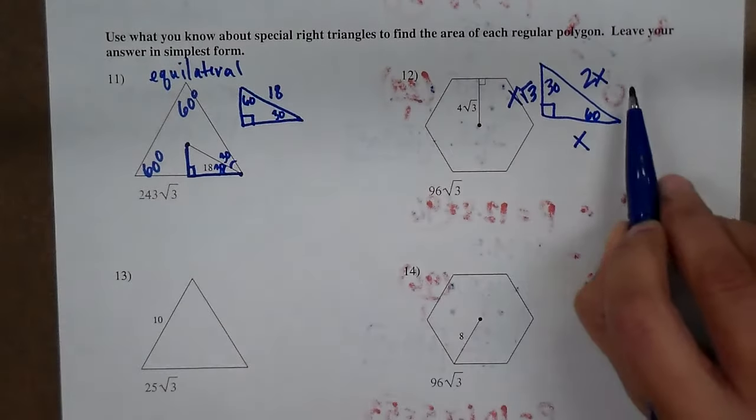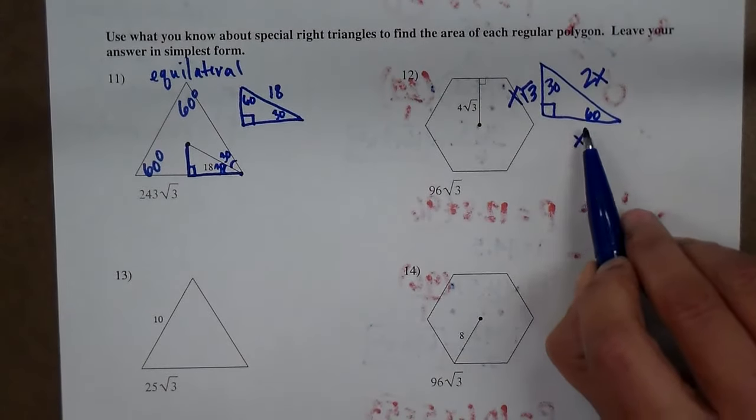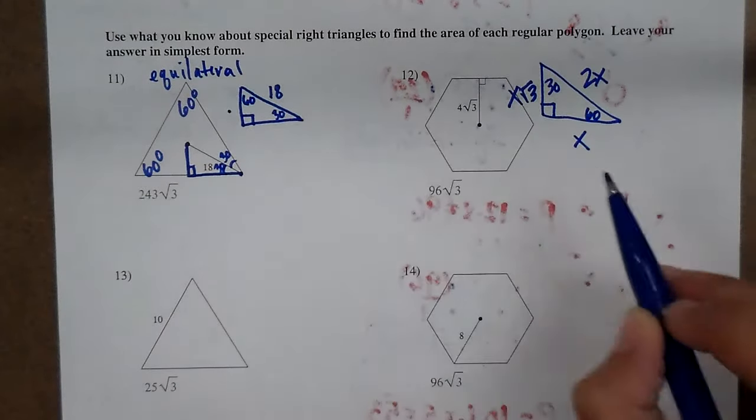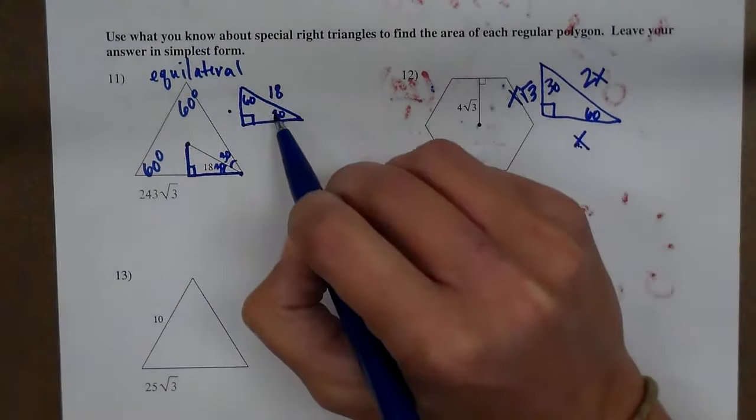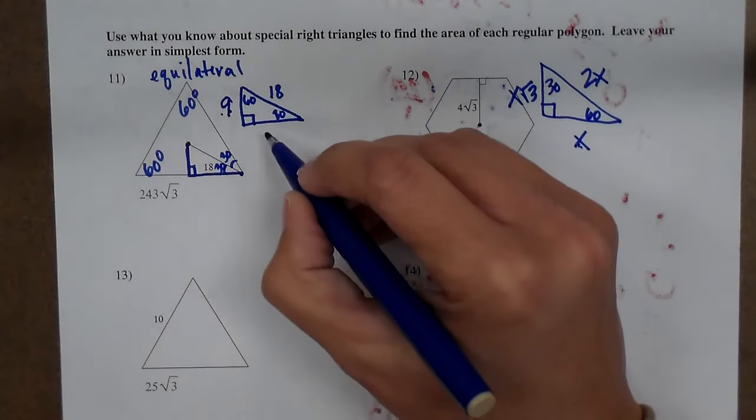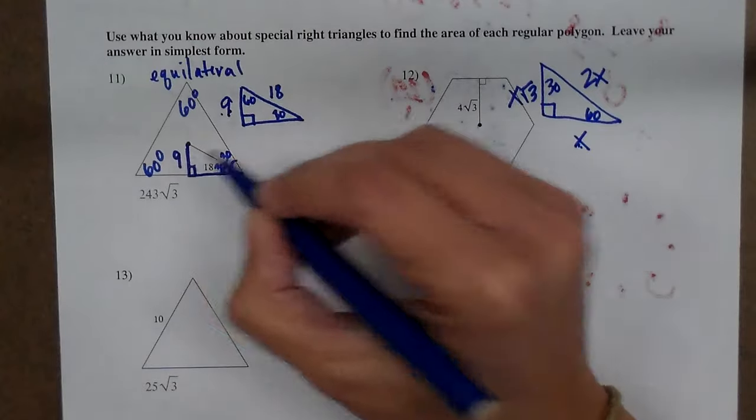My hypotenuse is 18. So what's the side opposite the 30 going to be? Half as big. So the side opposite the 30 is 9. And that's all we need. That's my apothem.